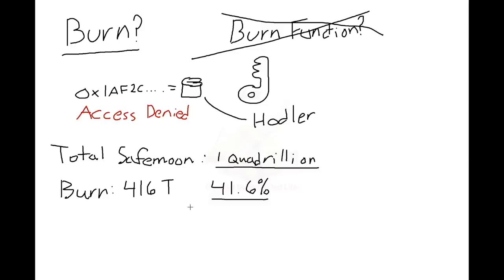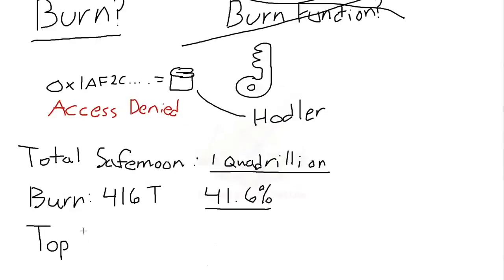Since the burn wallet owns 41.6% of the supply, it will eat, burn, whatever you want to call it, 41.6% of our reflections, or $2.08 out of that $5 that was split up off of Alice's gift to Bob. Our top whale, for instance, owns 27 trillion tokens. He has 2.7% of the supply of SafeMoon, so he will receive 2.7% of $5, or 14 cents out of that transaction.